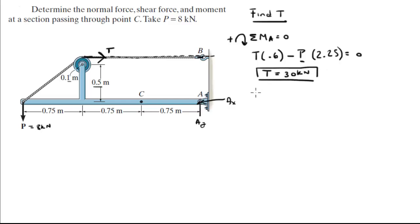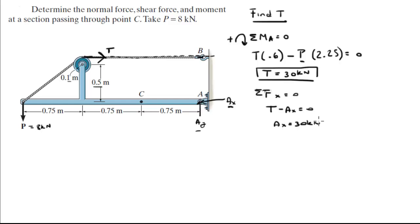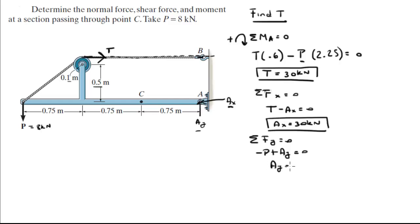Now that you have T, you can find Ax and Ay. The sum of the forces in x is equal to 0, so T minus Ax equals 0, meaning Ax is equal to 30 kN. We also know that the sum of the forces in y is equal to 0. P is going down, so minus P plus Ay equals 0, giving Ay equal to P, which is 8 kN.